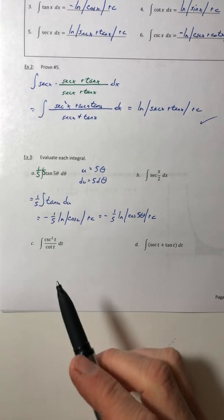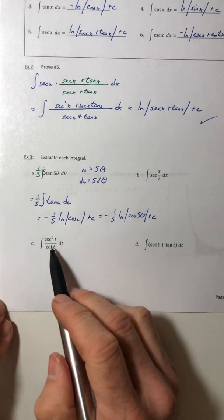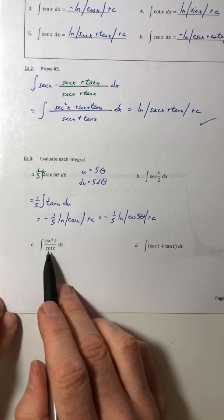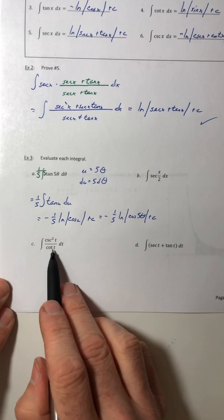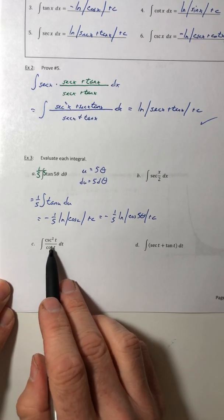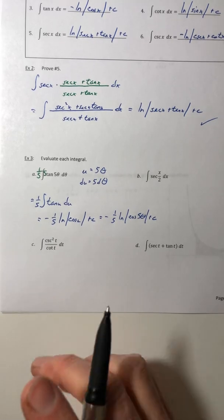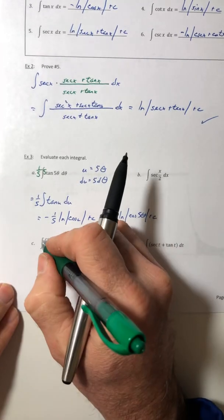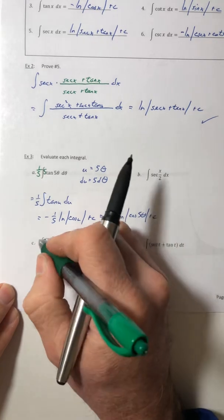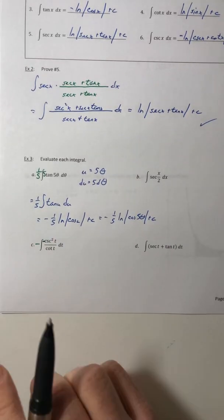Cosecant squared over cotangent. So anytime you have a fraction, no matter what it is, just look at the denominator and go, okay, is that derivative on top? So what's the derivative of cotangent? Well, that would be a negative cosecant squared. So I need a negative inside and out.